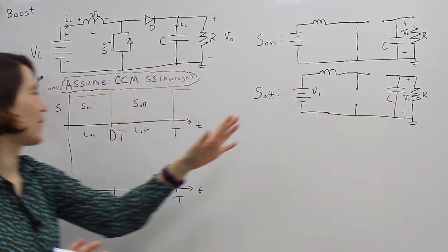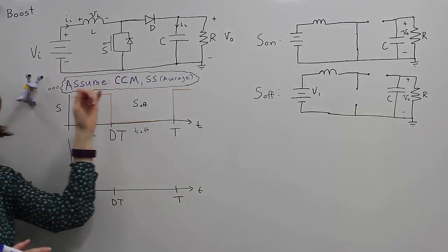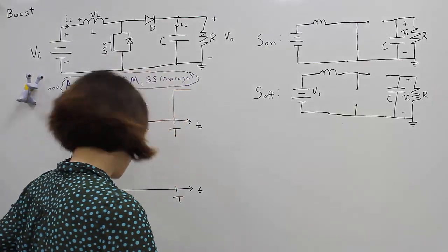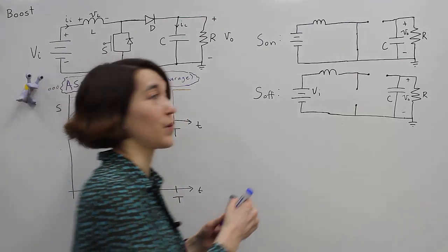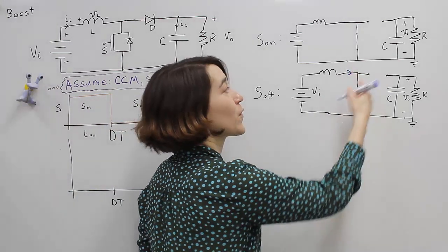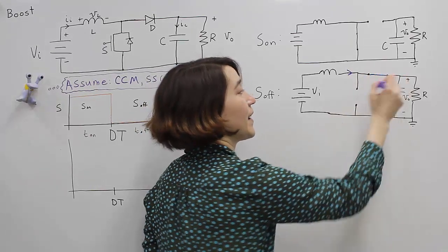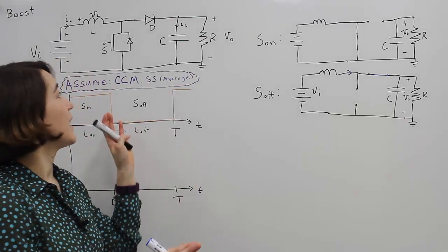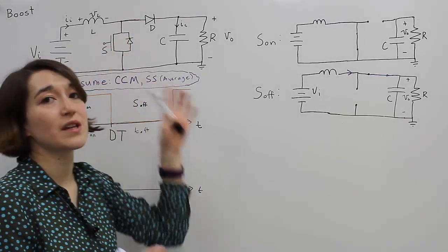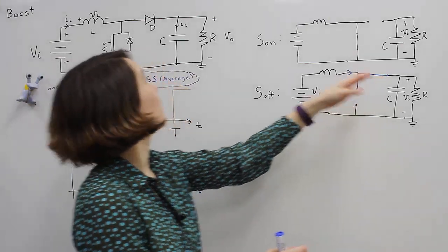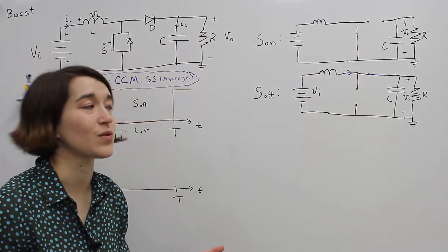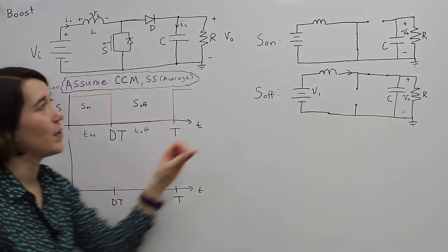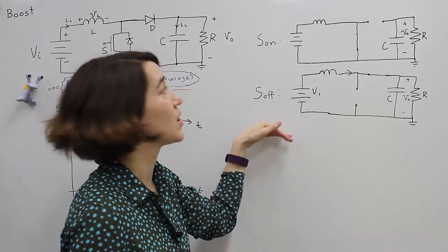If we assume, as we talked about before, that it's in continuous conduction, meaning that this current must be flowing, this inductor current will have to find a path to go through. And so the current will force this diode to be on and go in this direction. Of course, if the inductor current does reach zero, then the diode will actually turn off automatically because it's a passive switch. But for now, we're going to assume continuous conduction mode, meaning that we're switching between these two states.